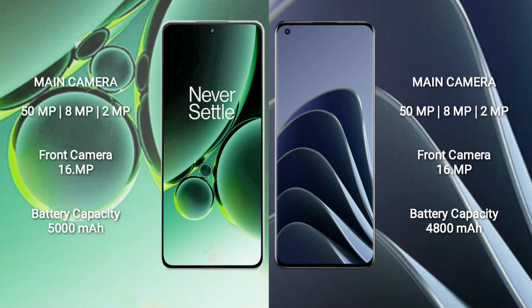OnePlus Nord 3 has a 5000mAh battery with 80W fast charging support. OnePlus 10T has a 4800mAh battery with 150W fast charging support.